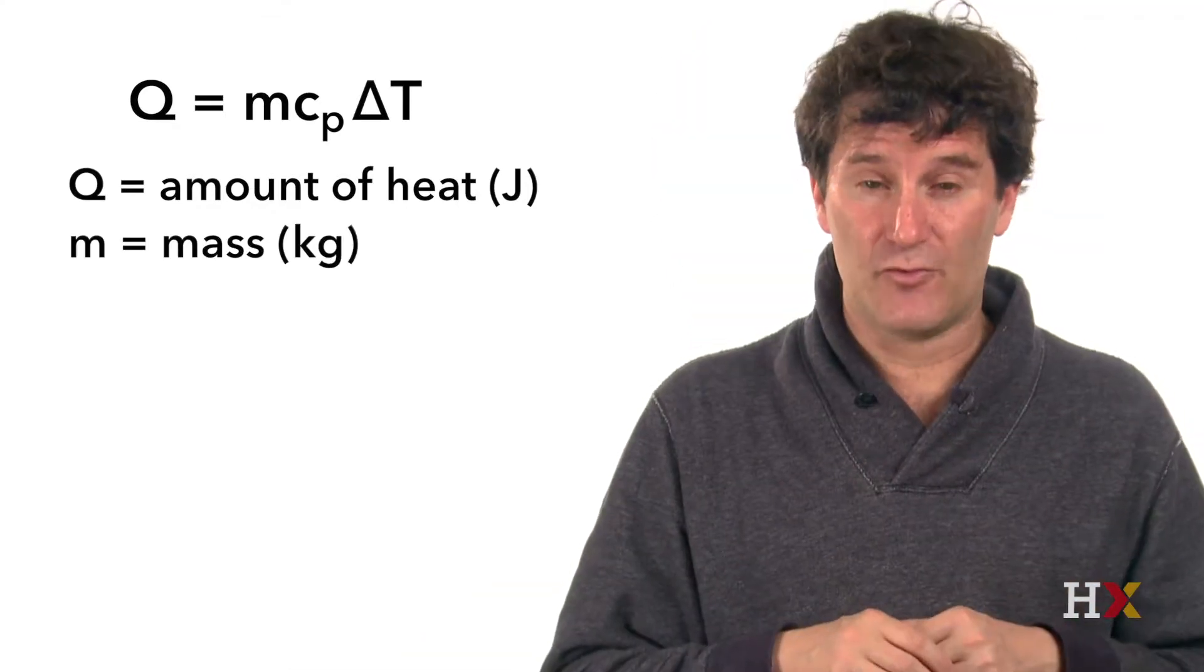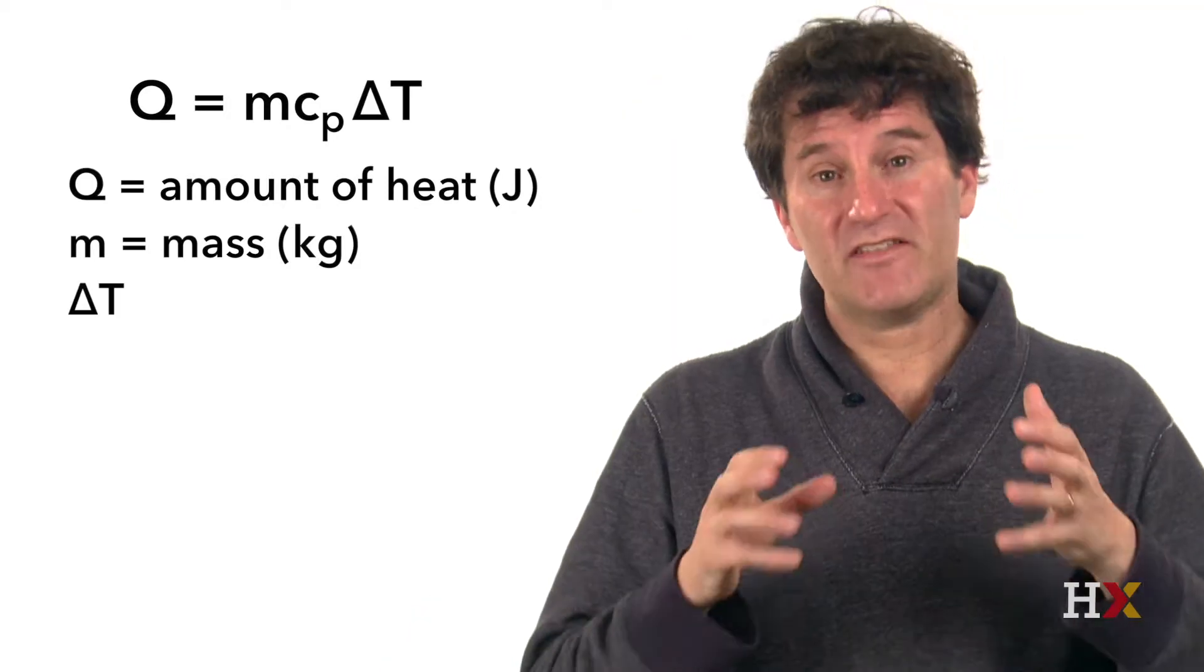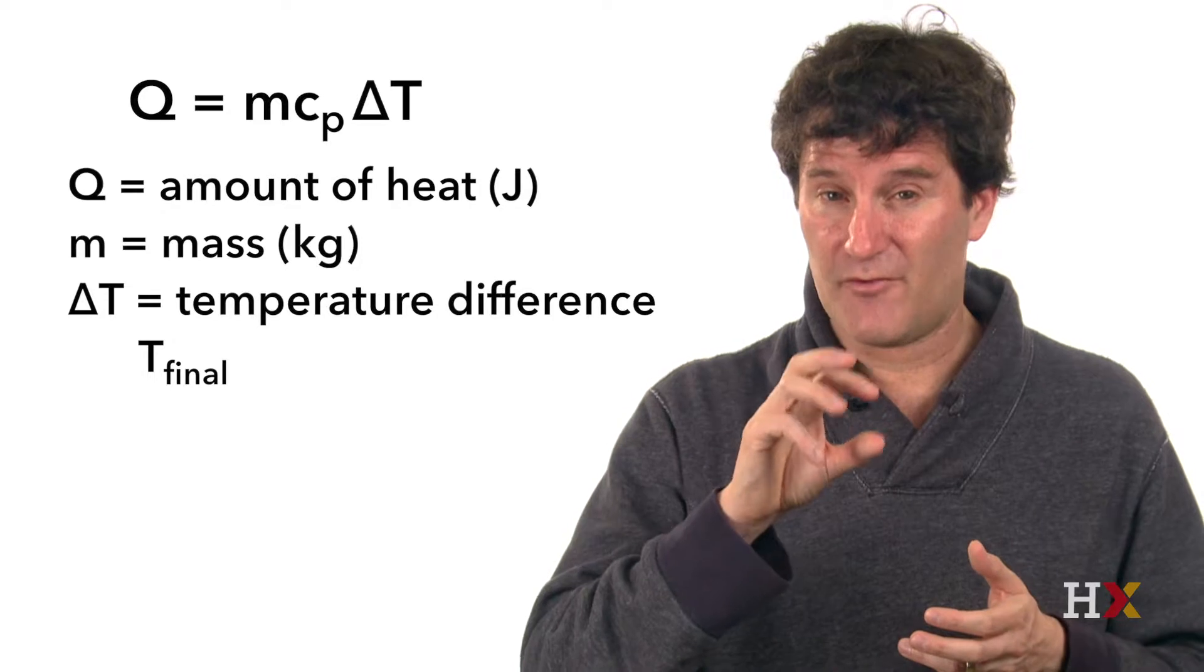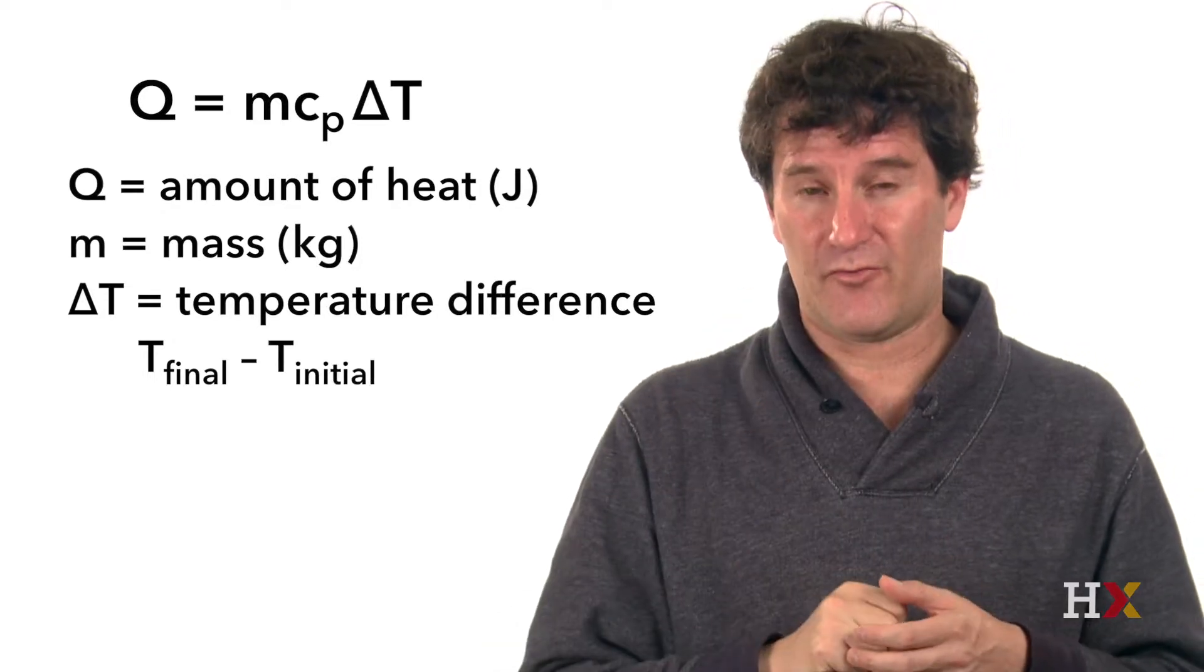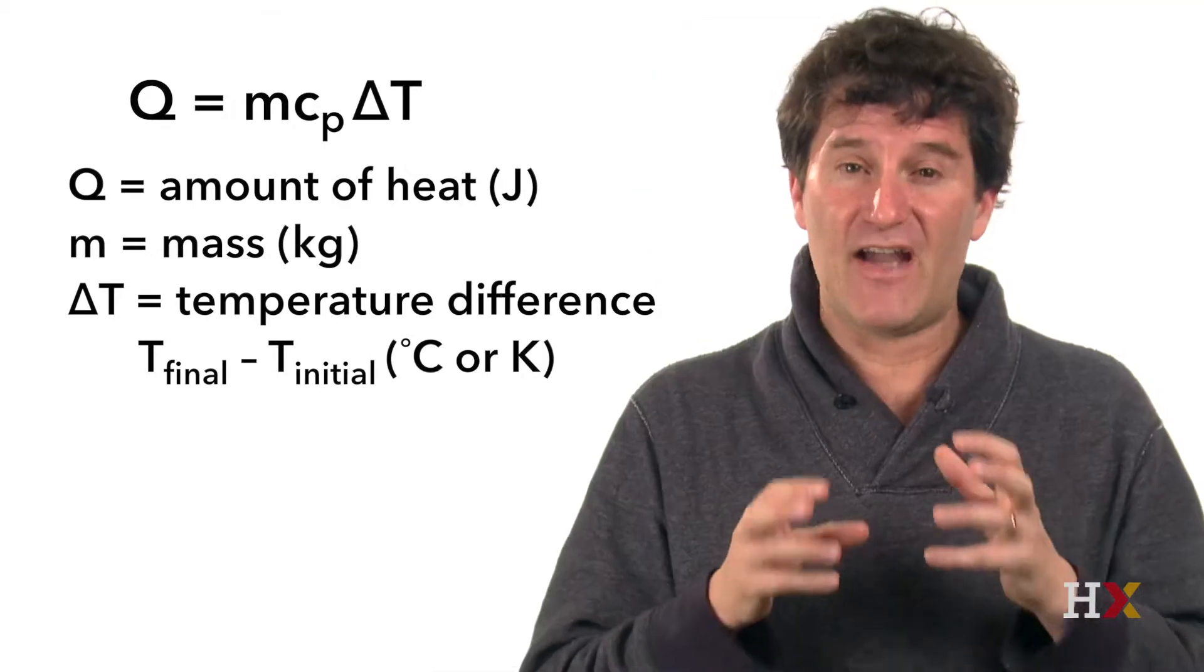m is the mass of the food. For the purposes of this equation, m should be measured in kilograms. Delta T is the temperature difference. That's the final temperature of the food minus the initial temperature of the food. And it should be measured in either degrees Celsius or degrees Kelvin.